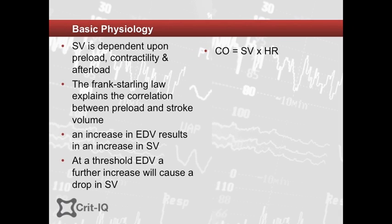Cardiac output is the product of stroke volume and heart rate. Stroke volume is dependent upon preload, afterload, and contractility. The Frank-Starling law explains the correlation between preload and stroke volume and hence cardiac output.